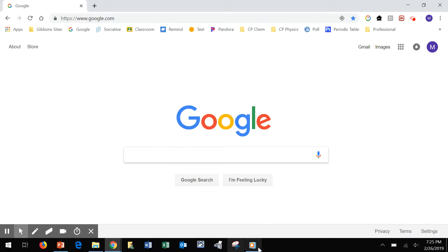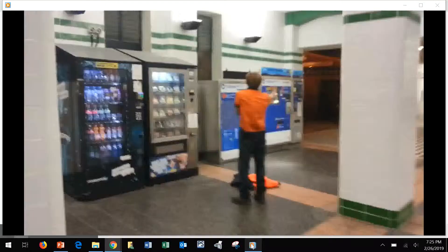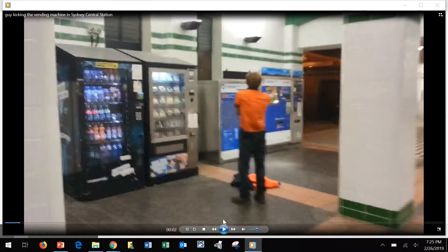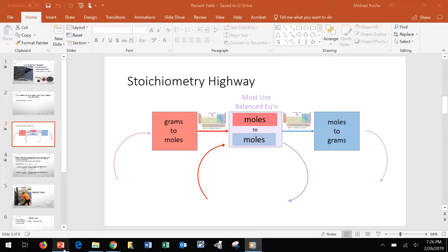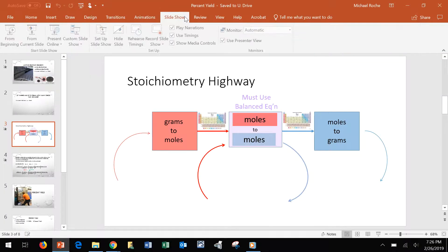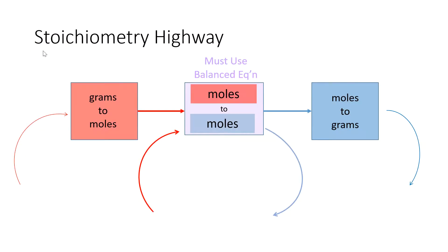We are going to talk about a phenomenon known as percent yield. Remember that we use a model for getting through stoichiometry problems. If grams is where you start and you need to get to moles, you're going to use the periodic table.